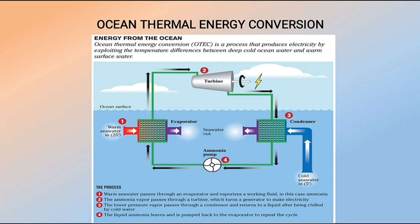Ocean thermal energy conversion (OTEC) produces energy from the temperature difference between warm ocean surface water and deep cold water, requiring at least a 20-degree Celsius difference. Solar radiation warms the surface water, which is pumped through an evaporator containing a working fluid. The vaporized fluid drives a turbine to generate electricity, then condenses back to liquid in a condenser cooled by deep cold ocean water. The working fluid — liquid ammonia — is pumped back to the evaporator and the cycle repeats.